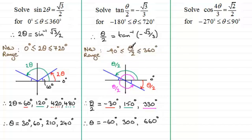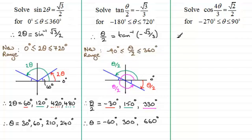All these angles are in the range from minus 180 degrees to 720 degrees. Now for this last one — and if you haven't had a go at these, I'd strongly encourage you to try this one — we've got to solve cos of 4 theta over 3 equals root 2 over 2, for theta greater than or equal to minus 270 degrees and less than or equal to 90 degrees. We'll take the inverse cosine of both sides, so 4 theta over 3, or 4 thirds theta, equals the inverse cosine of root 2 over 2.